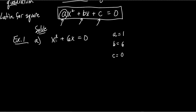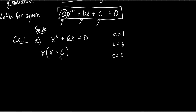Forget the equal zero for right now. Let's just look at x squared plus 6x and factor that. This is one of our easiest factorings because it's a common factor. What is in common with x squared and 6x? An x. So we factor it out, put a parenthesis, and figure out what's left over. If I factor out an x, I get x times (x + 6). x squared divided by x is x, and 6x divided by x is just 6.